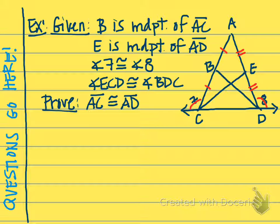Angles 7 and 8 are both outside of any of the triangles. And angle ECD is congruent to angle BDC. The only thing that I can see that really is congruent and would possibly be part of two triangles would be those last two angles that we just looked at.